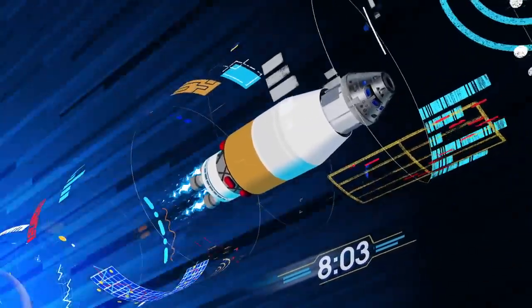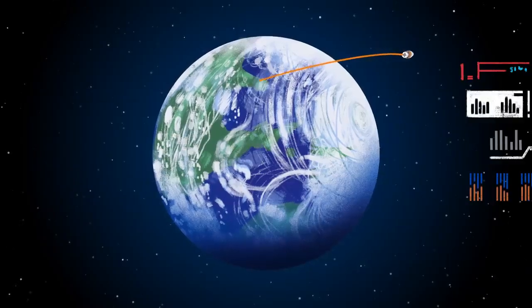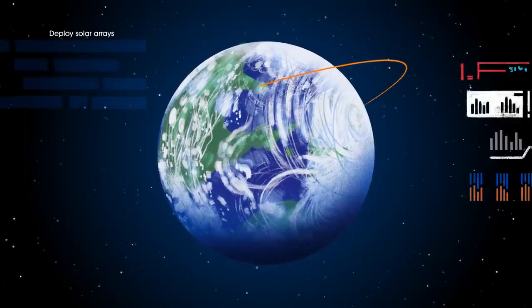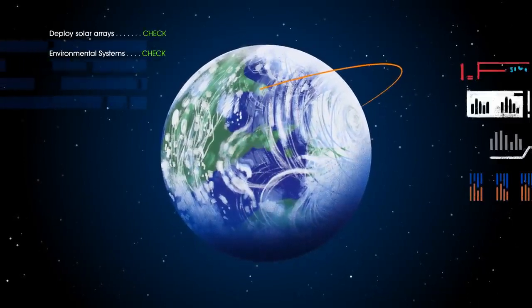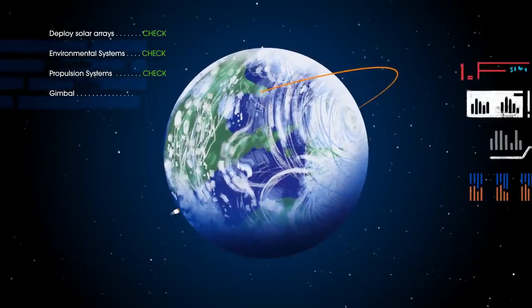The upper stage fires briefly, placing Orion into a parking orbit around the Earth. Here, the crew reconfigure the spacecraft and check systems to confirm everything is ready for deep space travel.